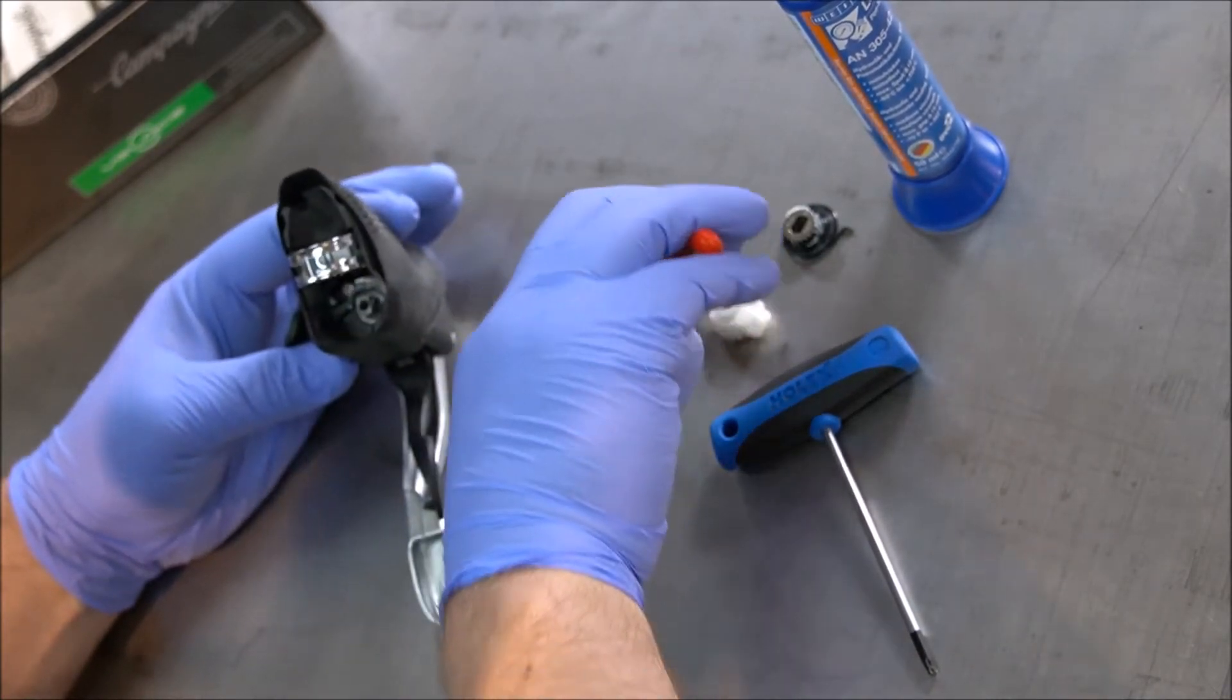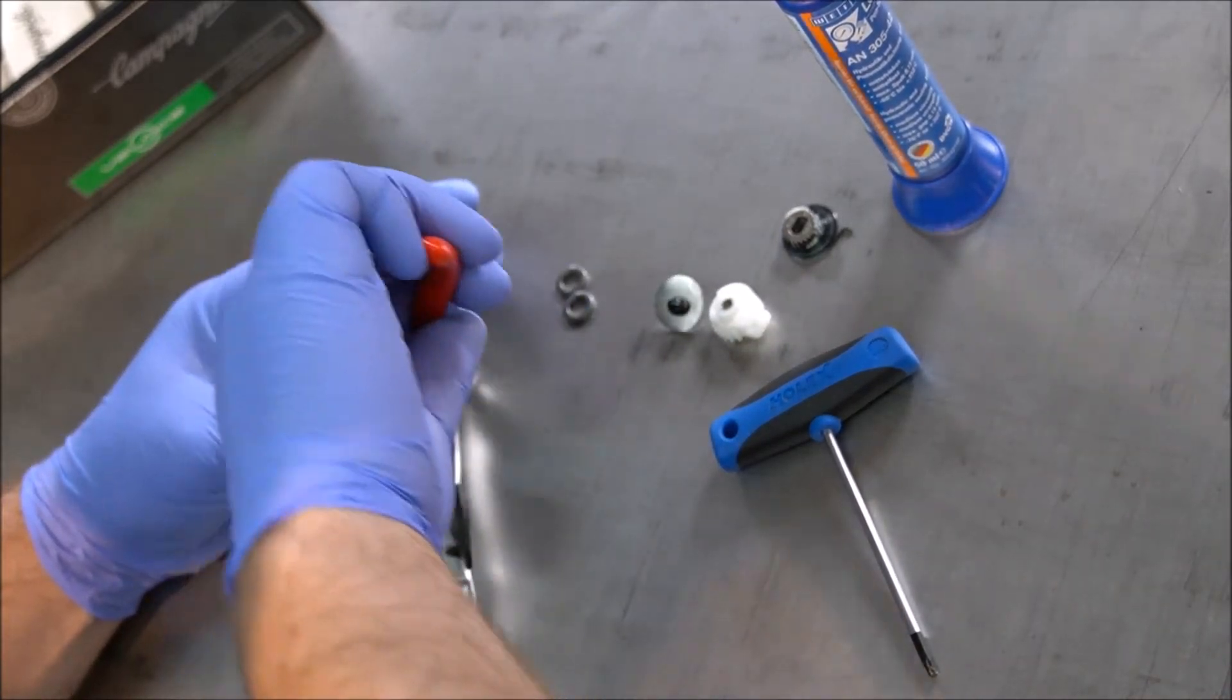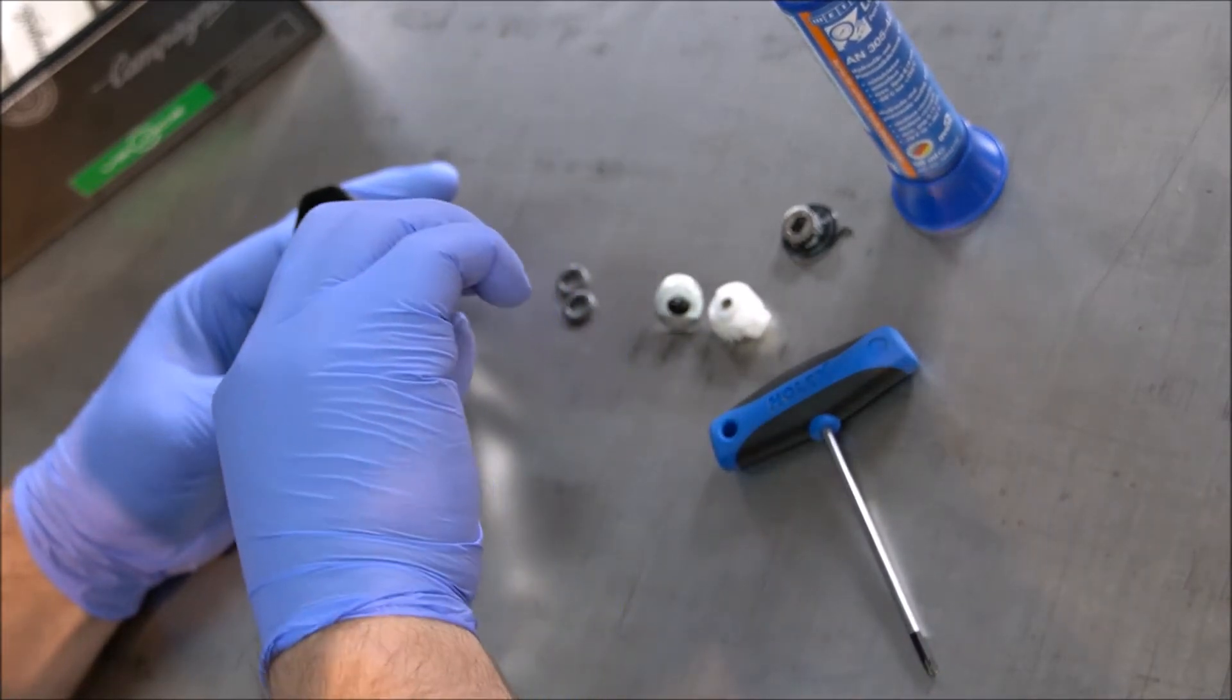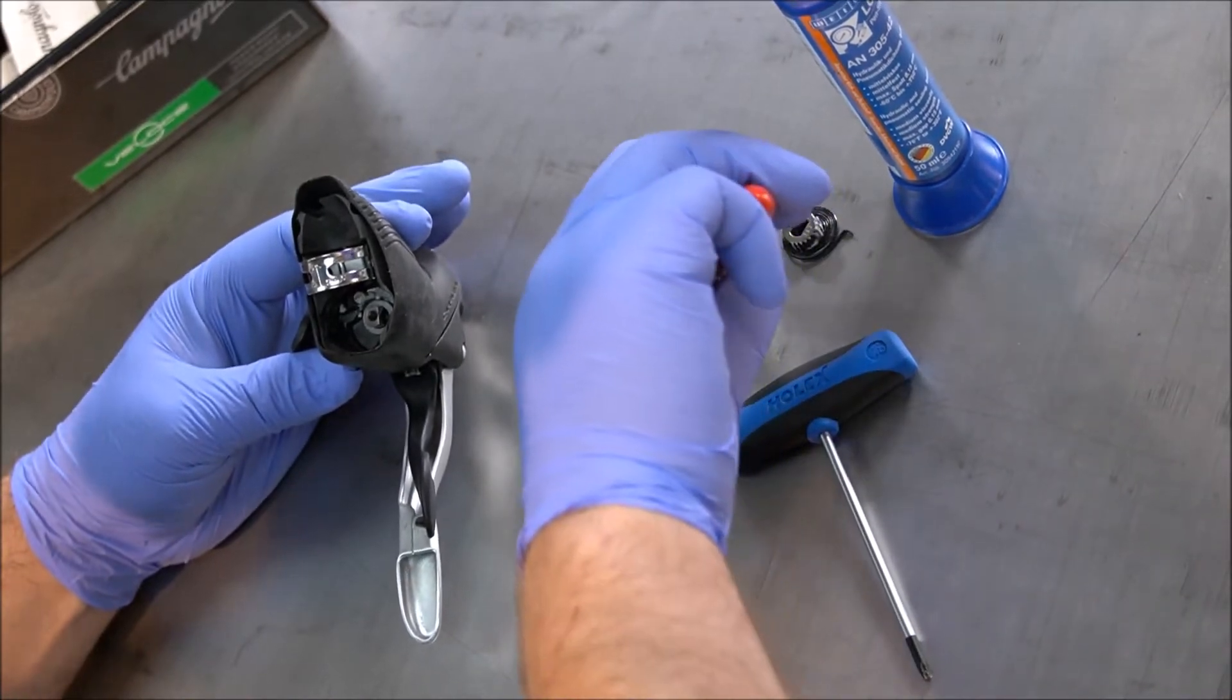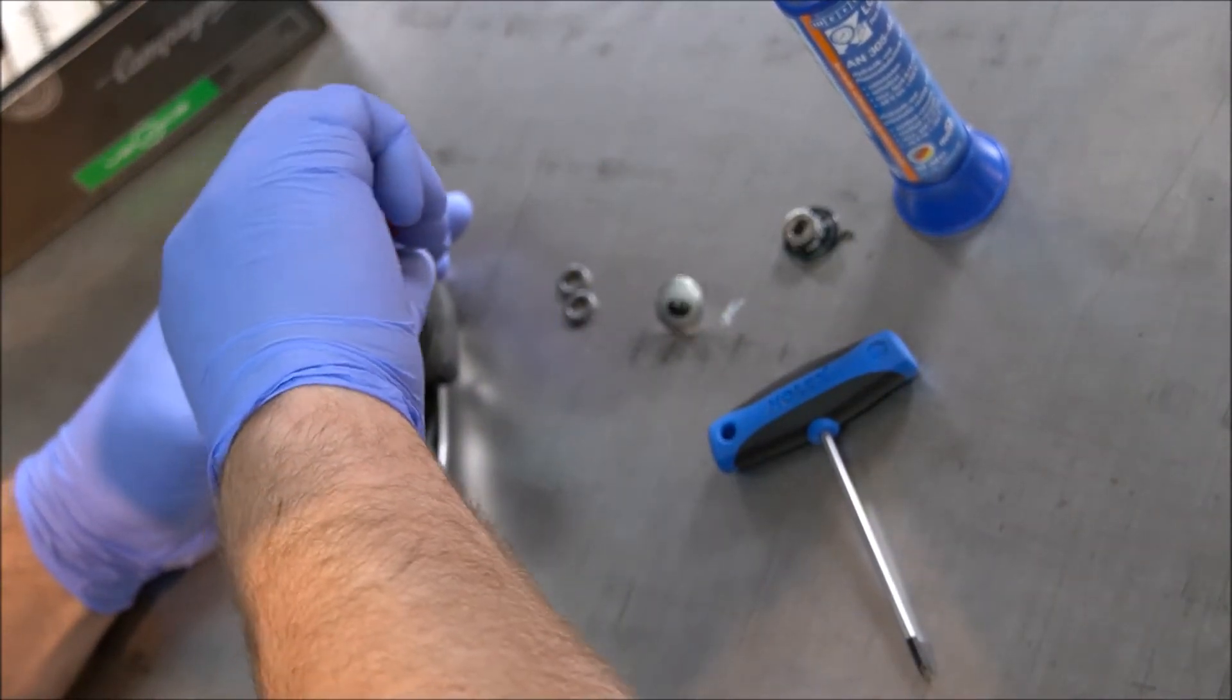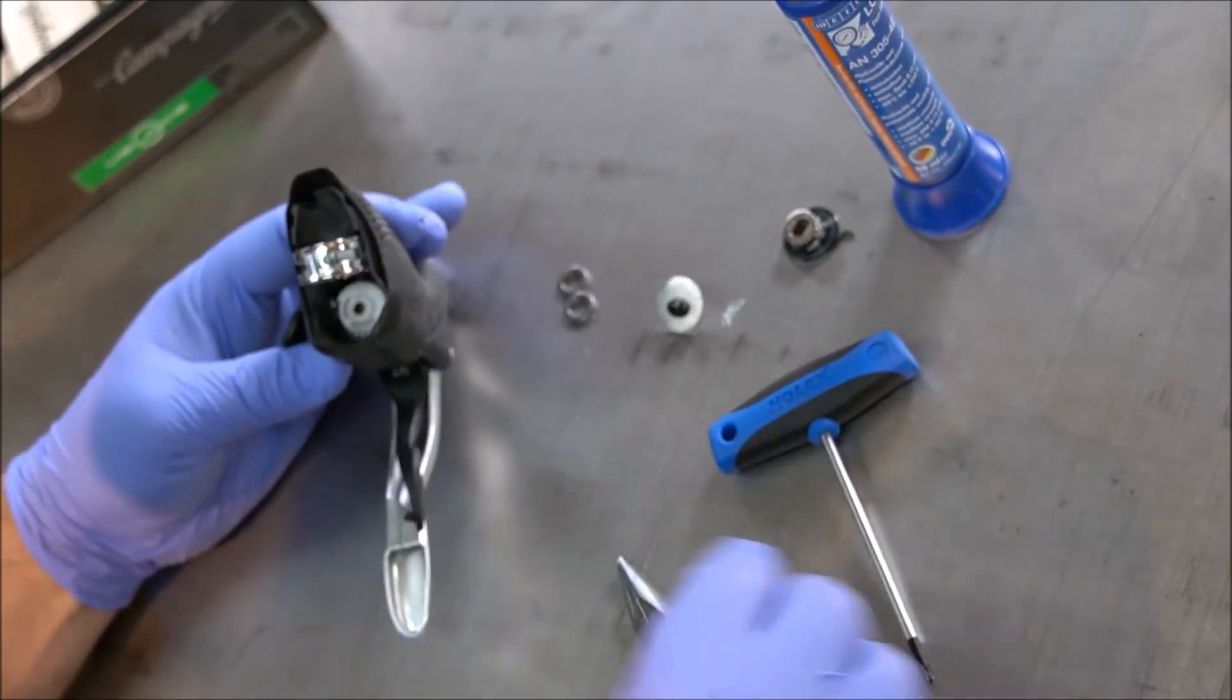I use two little washers with a thickness of 2mm. And then you have to reassemble the spool again. Just put it on the two flats.